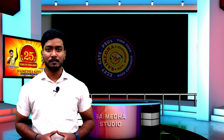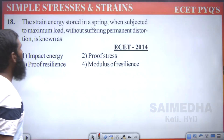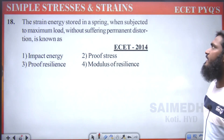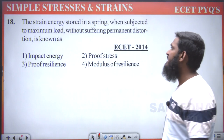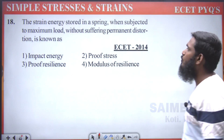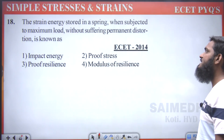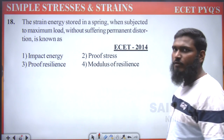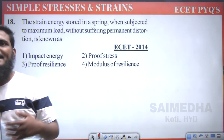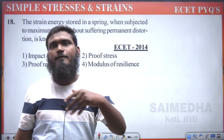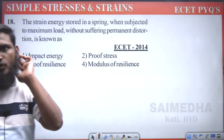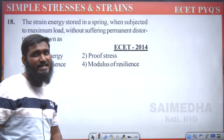Now let us start the video. The next question: the strain energy stored in a spring when subjected to maximum load without suffering permanent distortion is known as — impact energy, proof stress, proof resilience, or modulus of resilience? Whenever energy is stored within the elastic limit, we call it resilience.